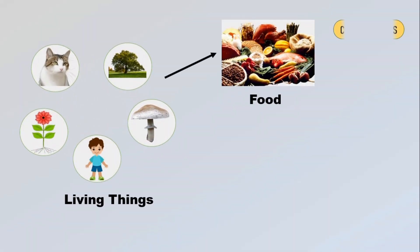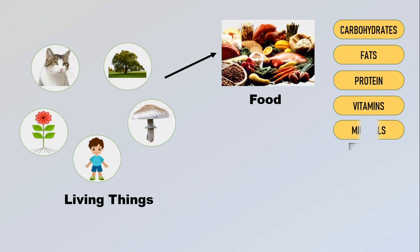All living things need food. Food contains nutrients such as carbohydrates, fats, proteins, vitamins and minerals which sustain life. The nutrients from food enable us to grow, remain healthy and provide energy, and carry out various life processes.